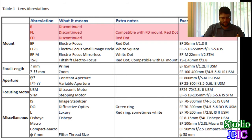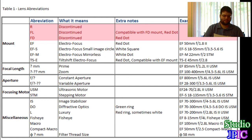Next is the EF-M mount, which stands for electro focus mirrorless — that's for the new mirrorless cameras that Canon is introducing. That lens is going to be smaller, weigh less, and cost a bit less, but still offer great image quality.